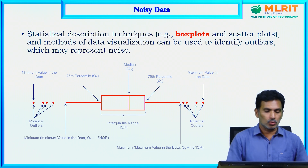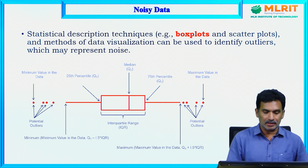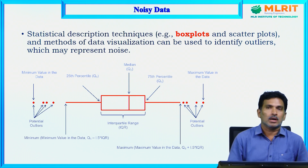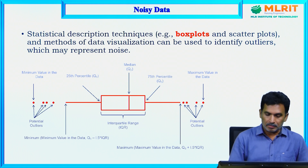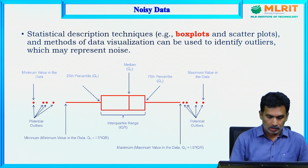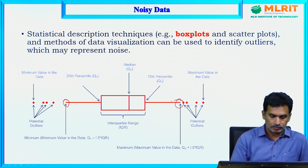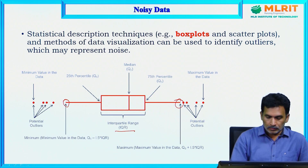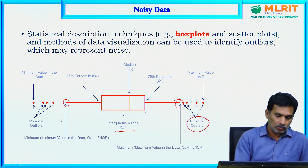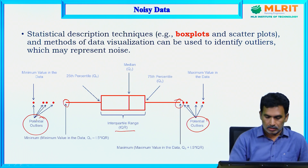How can we deal with and smooth this noisy data? There are statistical description techniques such as box plots and scatter plots, and data visualization methods that can be used to identify outliers which may represent noise. Looking at this box plot, it has different ranges including a minimum value, maximum value, and an interquartile range, and it can be used to identify potential outliers below the minimum value.